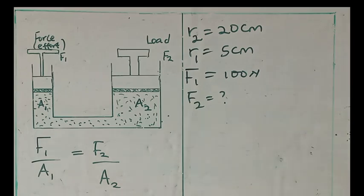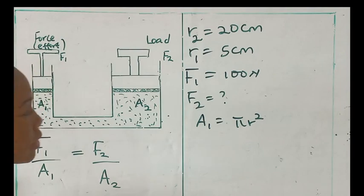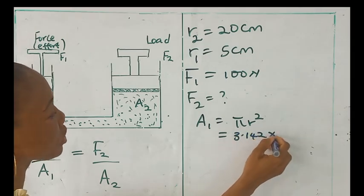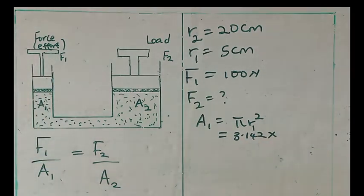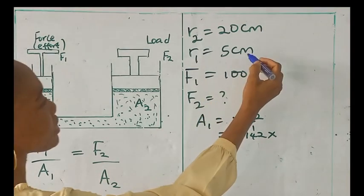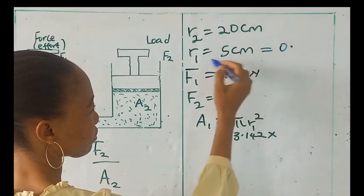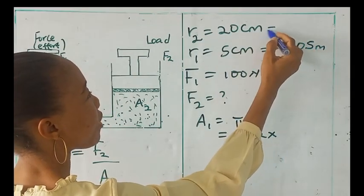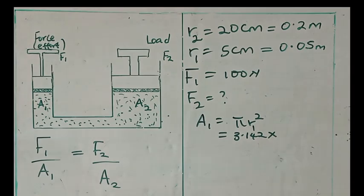Then we have to find the area for each of them. And remember that area is equal to pi R squared. So A1 will be pi, which is 3.142 times R for the first one. Let's use that 5 cm. We are going to convert it to meters so that everything will be in standard units. Divide this by 100 so that you have 0.05 meters. Divide this by 100 so that you have 0.2 meters. That's the first thing to do.